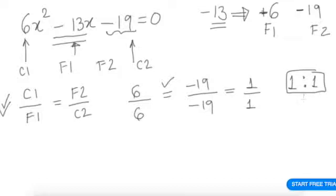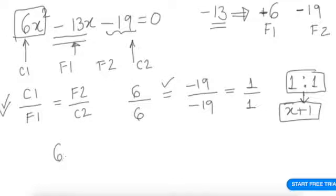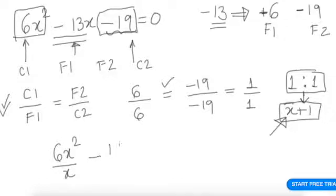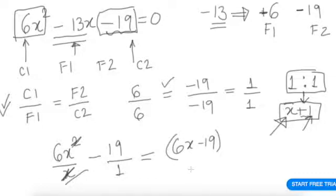Since the ratio is 1 to 1, the first factor is x + 1. To find the second factor: the first term 6x² divided by x, and the last term −19 divided by 1. So the factors are (x + 1)(6x − 19) = 0.